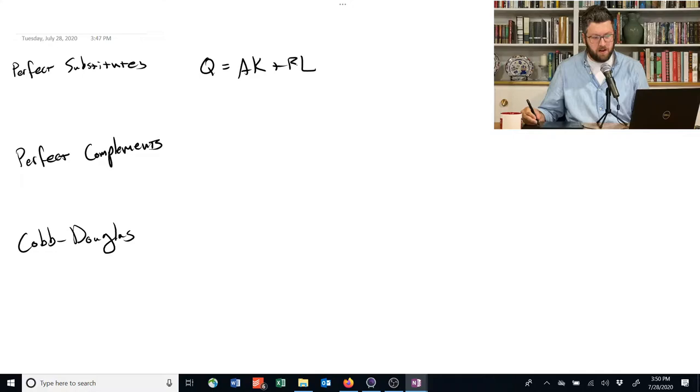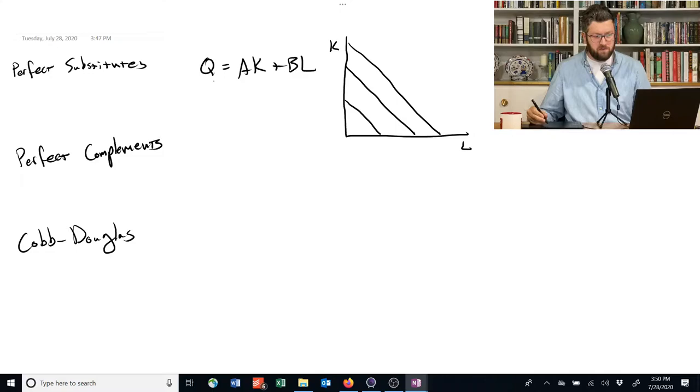And the isoquants for this are super simple, because they are just lines. Straight lines all the way through. How do I know that's the case? Let's make this k and I'll make this one l.